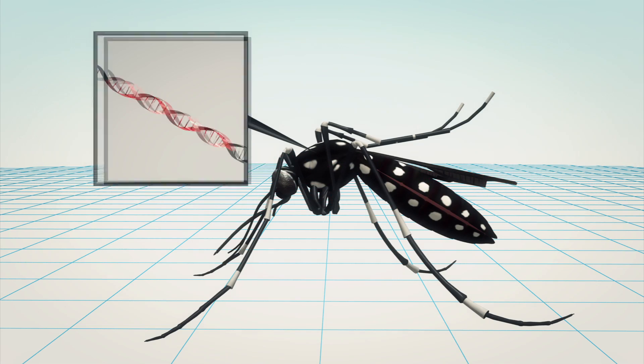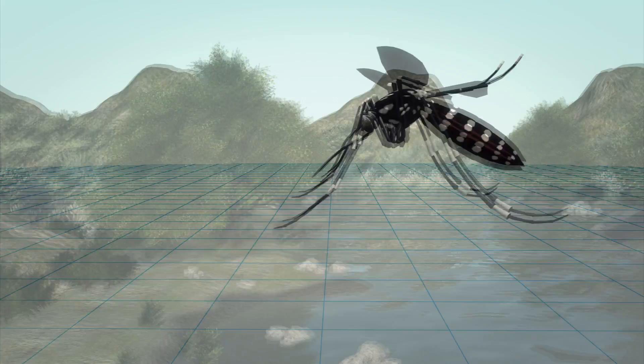Scientists genetically altered male mosquitoes by putting a sterility gene into the mosquito's DNA.